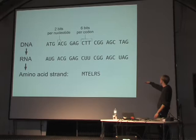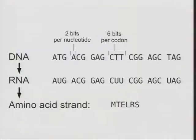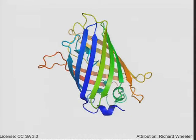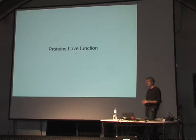So you go DNA → RNA → amino acid strand. Just as DNA bases have letters, amino acids also have letters, so you can represent an amino acid code as a sequence. Once you have an amino acid strand, it folds into a structure — one strand of amino acids folded into the protein's 3D structure. It's the structure and the different amino acids in different positions that give the protein its function. Proteins have function, which is why they're useful.